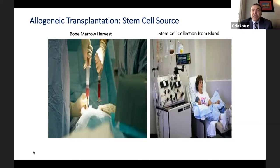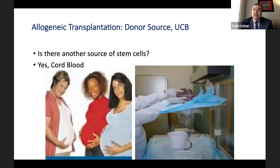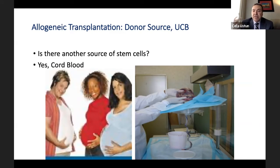There can be another source for stem cell transplantation — yes. After a baby is born, the umbilical cord has quite a few stem cells. Those cells are collected and saved in cord blood banks, and can be used for another individual as a stem cell source. We call this umbilical cord blood transplantation.